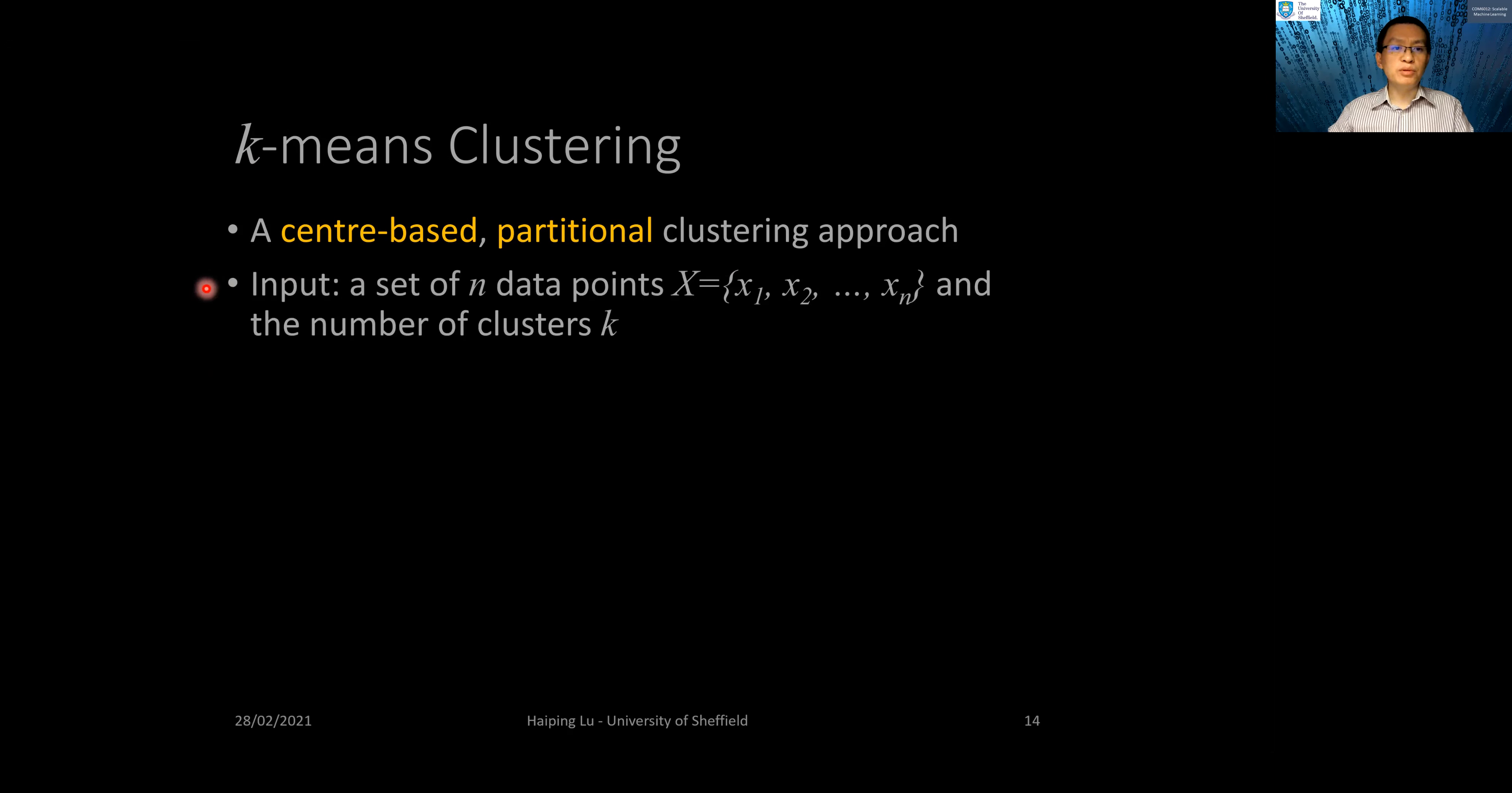The input to k-means clustering is a set of n data points x1 to xn, and the number of clusters k. For a set C from c1 to ck, which stands for centers or centroids, that is k cluster centers.